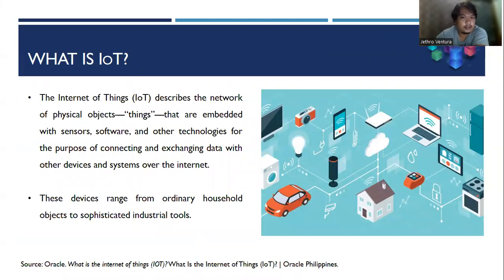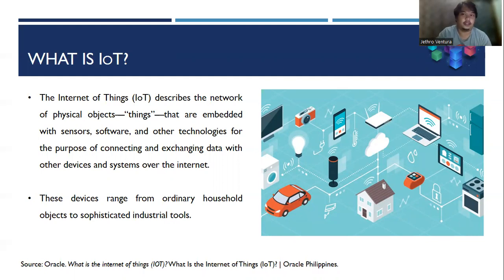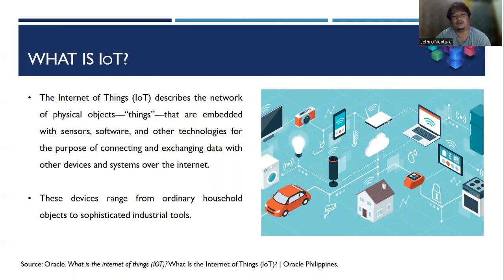Internet of Things describes the network of physical objects or things that are embedded with sensors, software, and other technologies for the purpose of connecting and exchanging data with other devices and systems over the Internet. Most of us are already familiar with IoT, and these devices may range from ordinary household objects to sophisticated industrial objects.